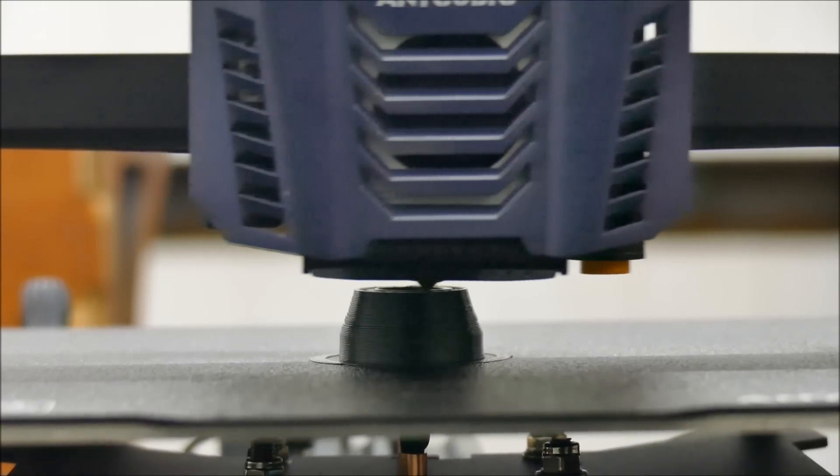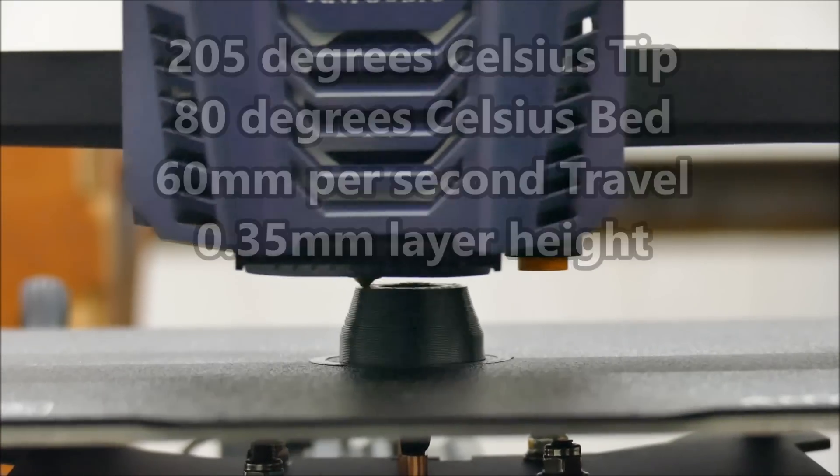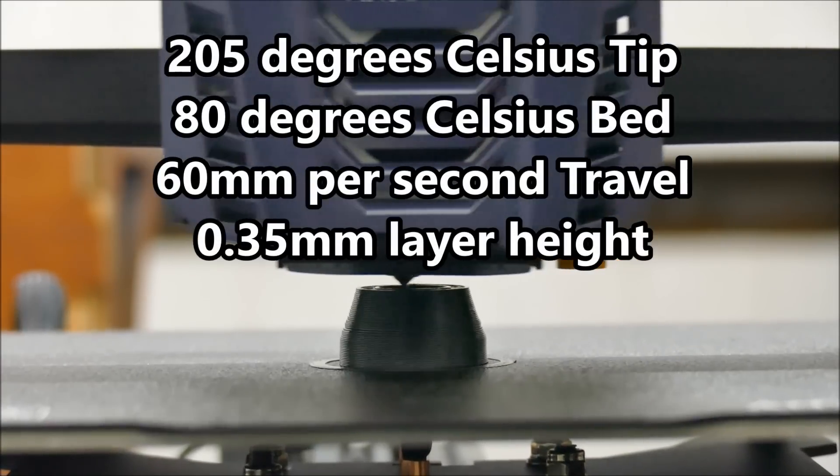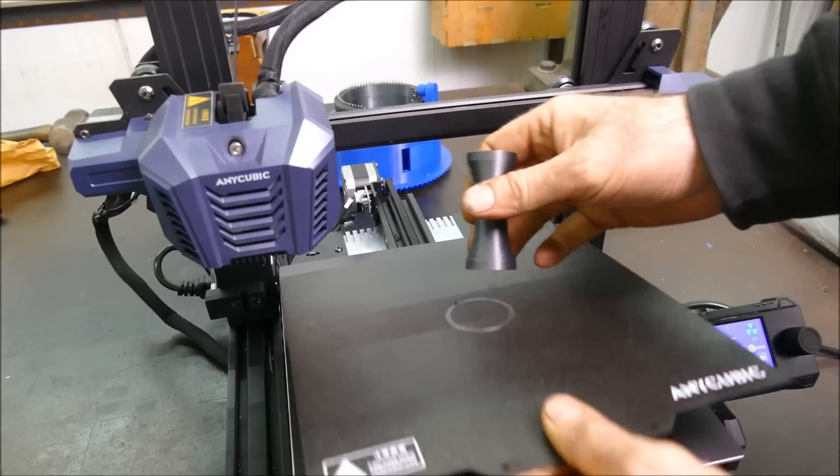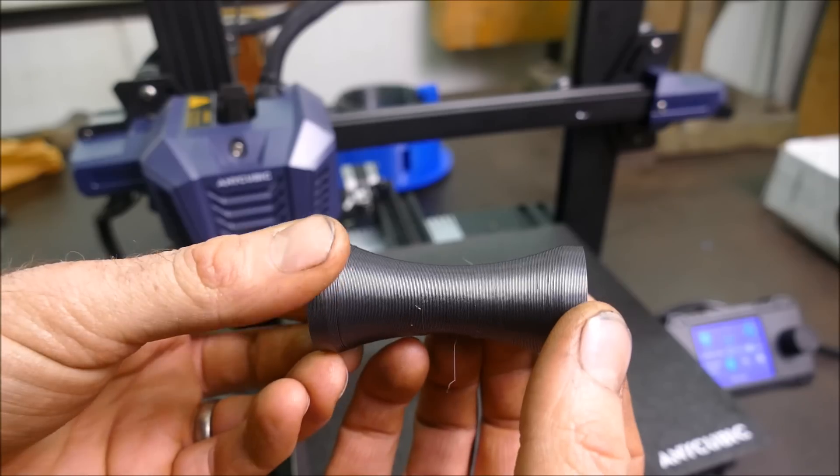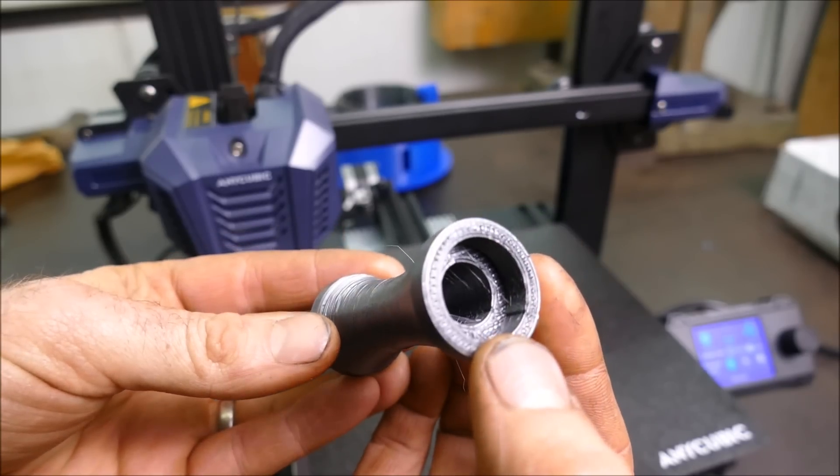So Billy also advised to use a 0.8mm nozzle. This whole handle print should take no more than 21 minutes. Yep, I'm pleased with those results.